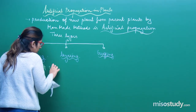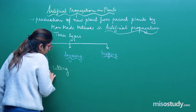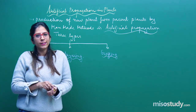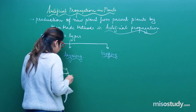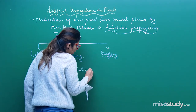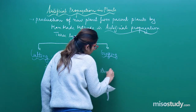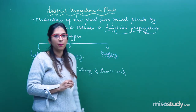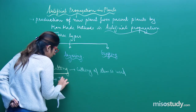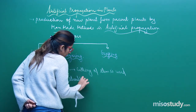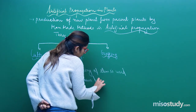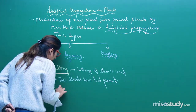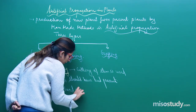In cutting, the name itself indicates that we use a cutting of a plant. Normally we use a stem cutting. The cutting of stem that is used should have a bud present. Only then will it grow; otherwise it will not. The cutting is then placed in soil.